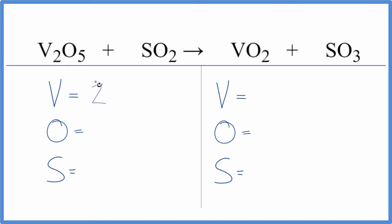So we have 2 vanadium, 5 oxygen, plus, don't forget these 2 oxygen right here, so we have 7, 1 sulfur.